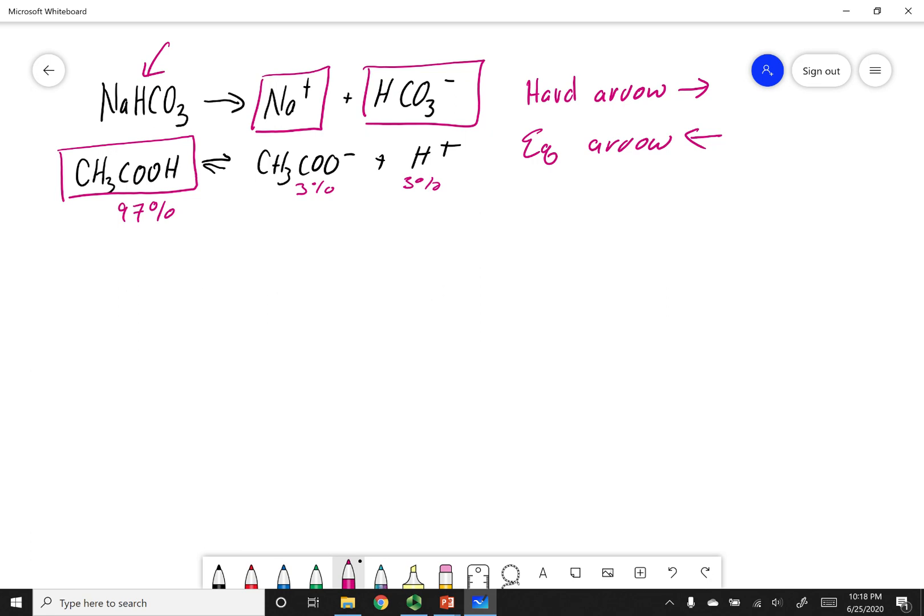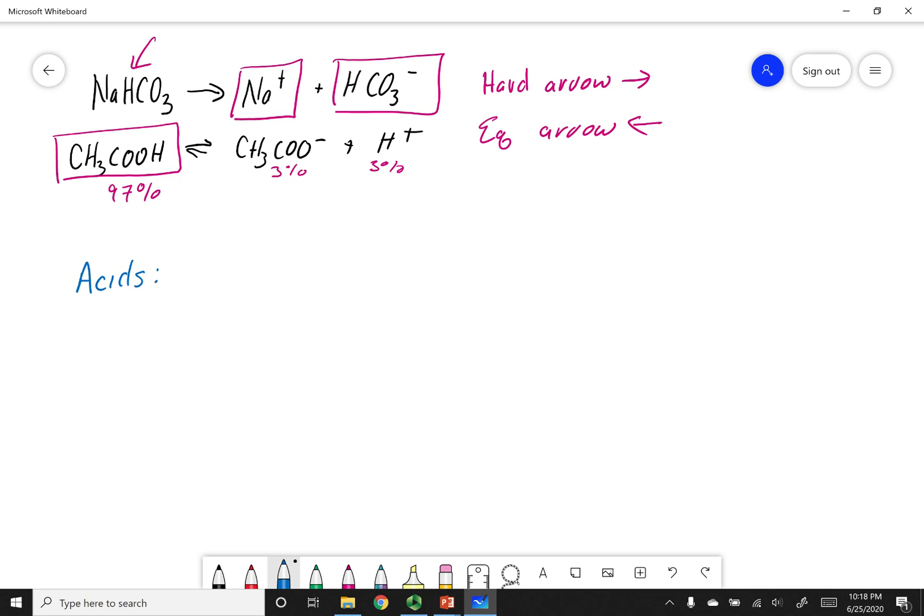Now we're going to go to step two. What I want to do is list all my acids. So what I'm going to look for are things that have a proton that can be donated, and I'm going to only focus on the major species, the ones that I've boxed above. So Na+, we talked about this in the last lecture, is neutral. It's not considered an acid.